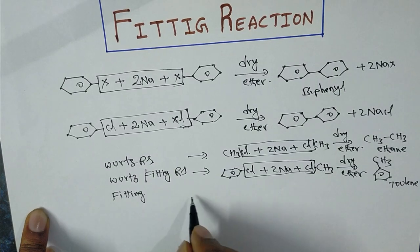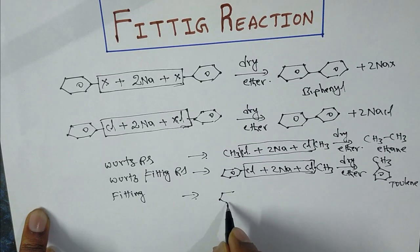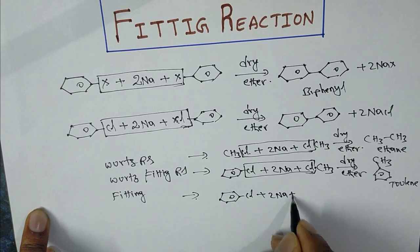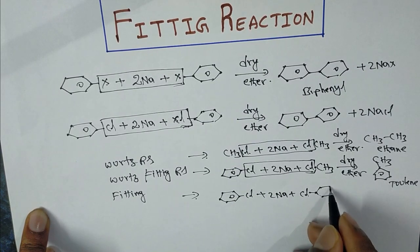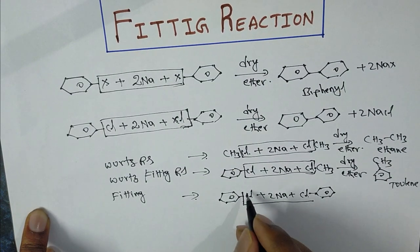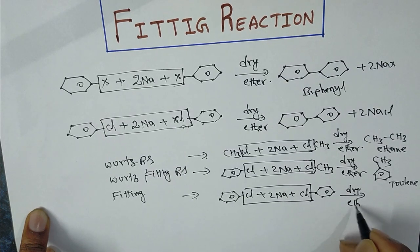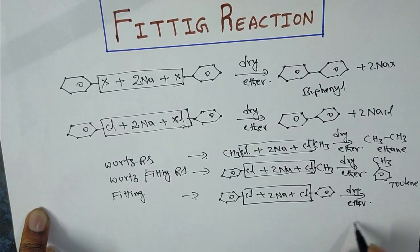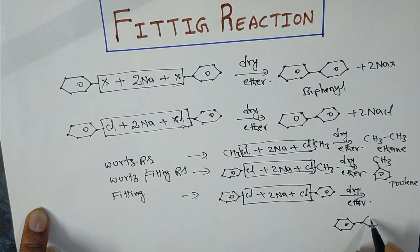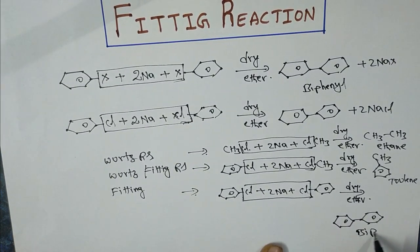So in the Fittig reaction, we take both aryl halides — two chlorobenzenes — when reacted with sodium metal in the presence of dry ether, we get biphenyls.